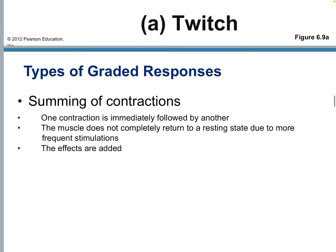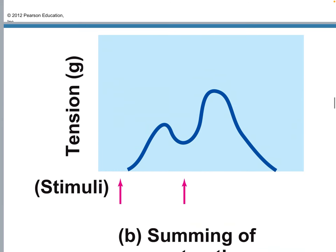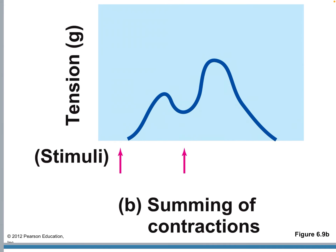From here on out, we need to talk about summing of contractions. One contraction is immediately followed by another. Your muscle does not completely rest due to more frequent stimulations, and the effects are added up. You get a stimulus at the first point, but before it returns to a resting rate, you get another contraction.